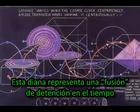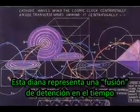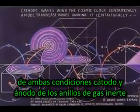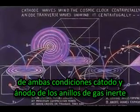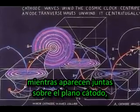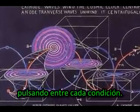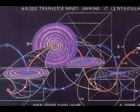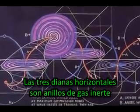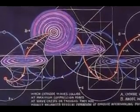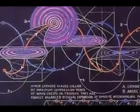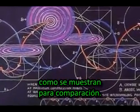This bullseye represents a time-stopped fusion of both cathode and anode conditions of the inert gas rings as they appear together on the cathode plane, pulsing between each condition. The other three horizontal bullseyes are inert gas rings in their cathode condition with no anode centers shown for comparison.